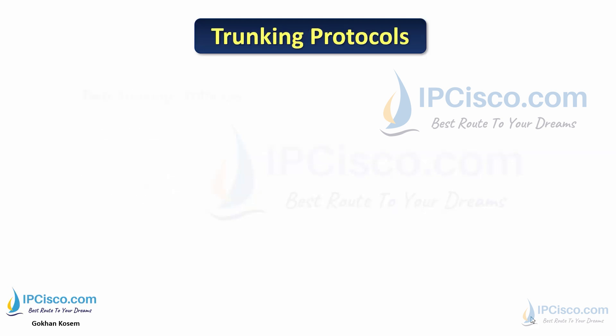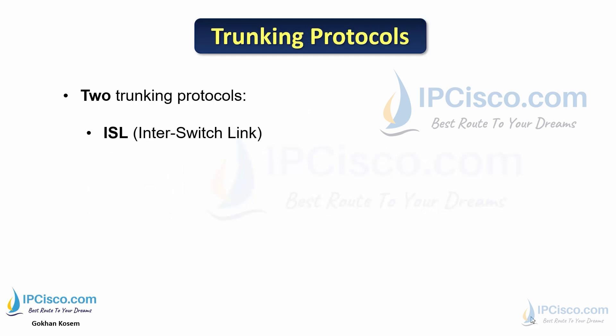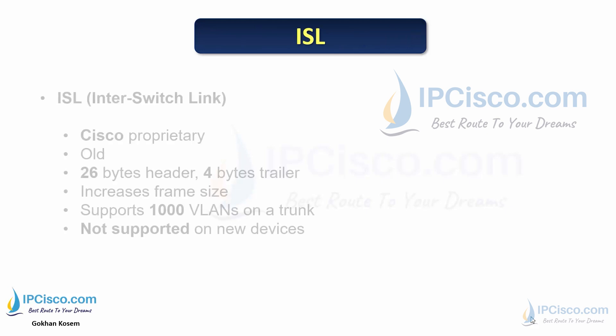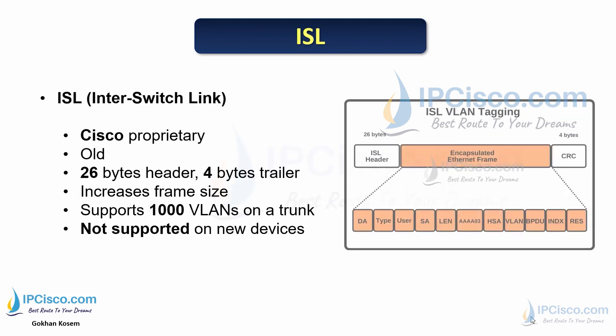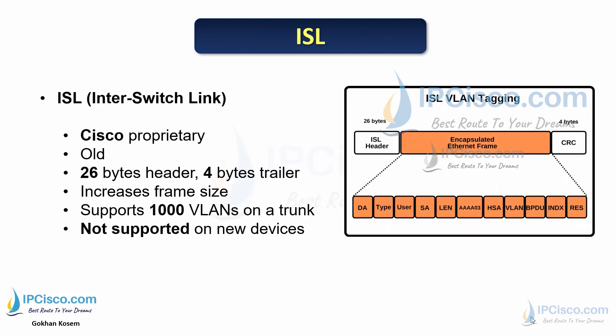There are two trunking protocols: ISL (Inter-Switch Link) and IEEE 802.1Q. ISL is a Cisco proprietary old protocol. It adds a 26-byte header and 4-byte trailer to the frame, which increases the frame size and causes giant frames. ISL supports 1,000 VLANs on a trunk.